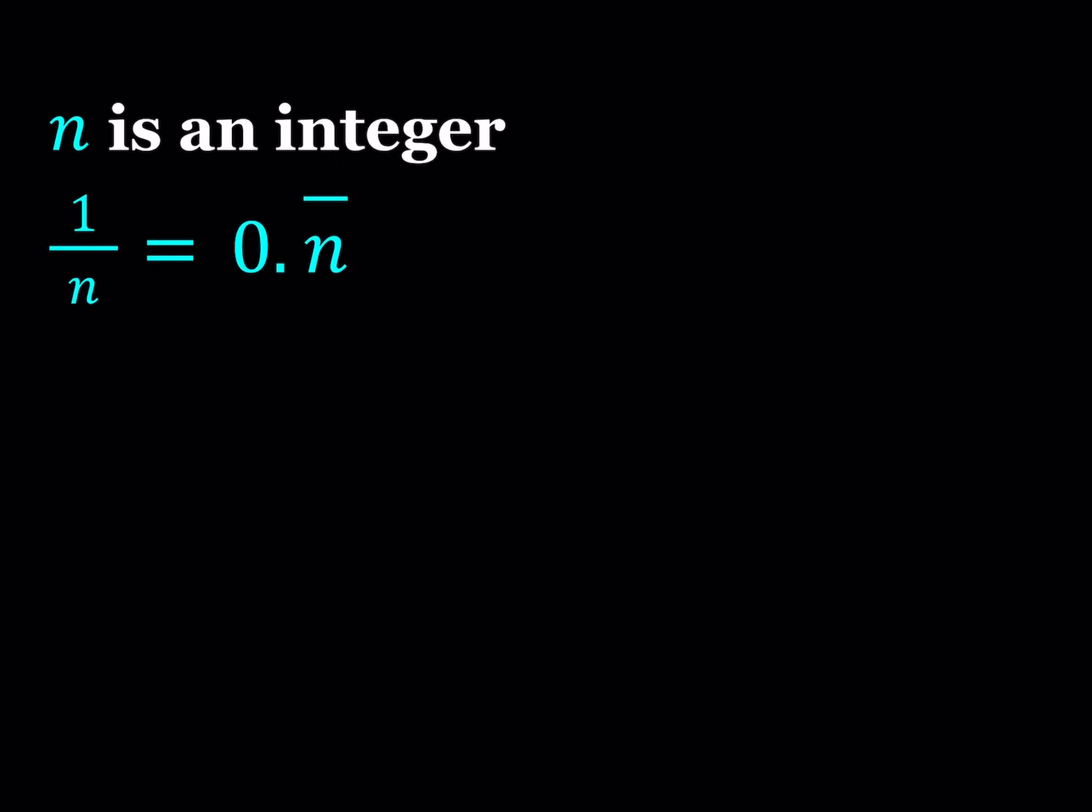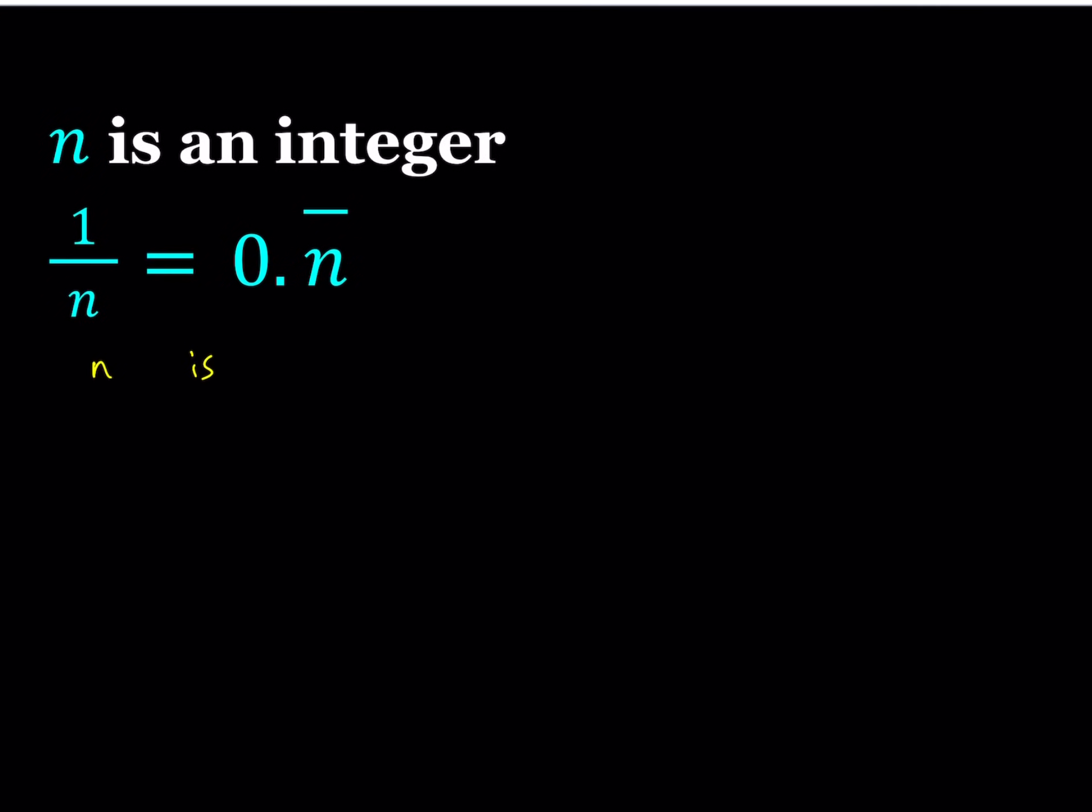Now we're going to start by obviously the basic case. We can do some observations. For example, what happens if n is a single digit number? What if n is a single digit like 5? Is it true that 1 over 5 is 0.5 repeating? Well that's not true because 1 over 5 does not equal 0.5 repeating.